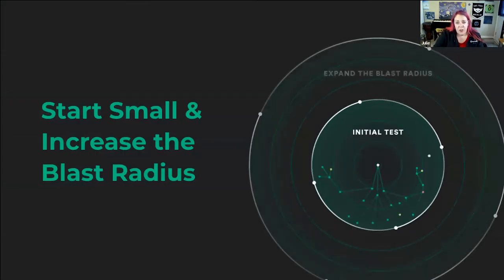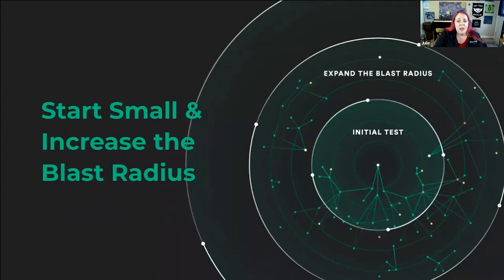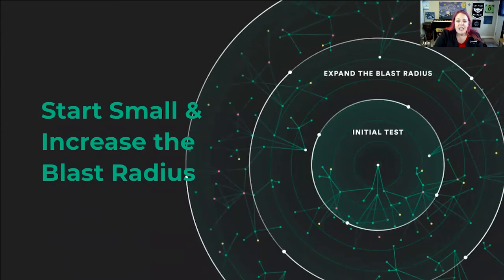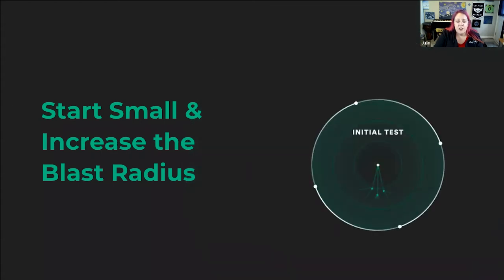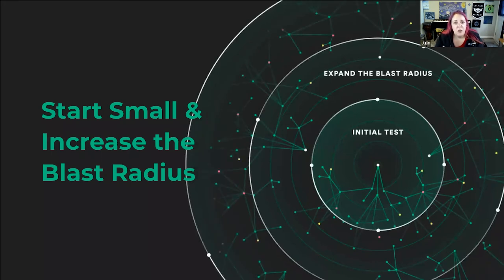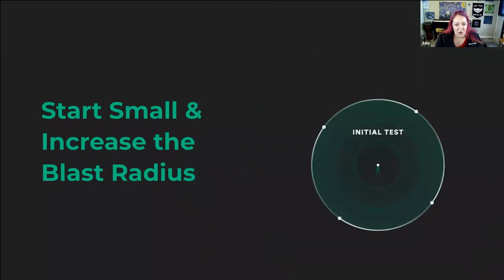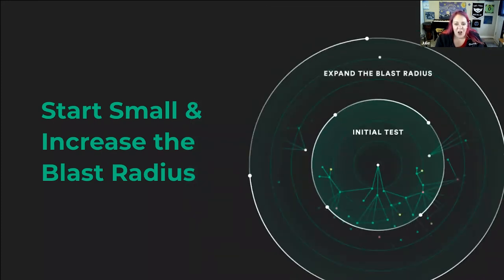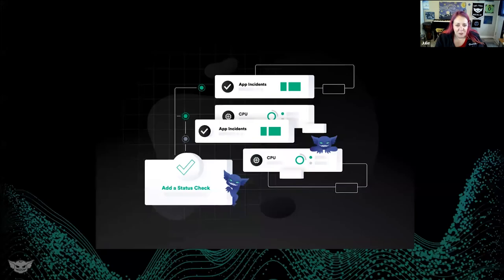When you practice chaos engineering, you want to start small and be careful — start with a single service or host, not necessarily the whole application or fleet, in a controlled environment with a ready team and tools to see what's going on and troubleshoot. Once you've started small, then you expand the blast radius. You also want to safely schedule or automate your chaos engineering experiments so you can expand that blast radius out.